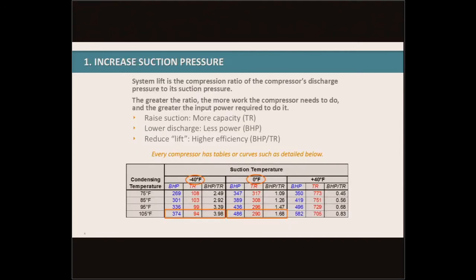Going into the first one — increasing suction pressure. To define suction pressure and lift: system lift is a compression ratio of the compressor's discharge pressure to its suction pressure. The greater the ratio from suction pressure to discharge pressure, the greater amount of energy the compressor utilizes. So if we have a larger ratio with a lower suction and a higher discharge, it uses much more energy. If we're able to increase our suction and/or decrease our discharge, then we're using less energy for our compressors.